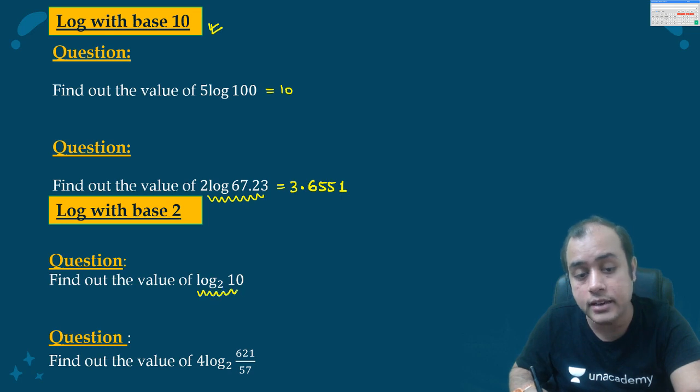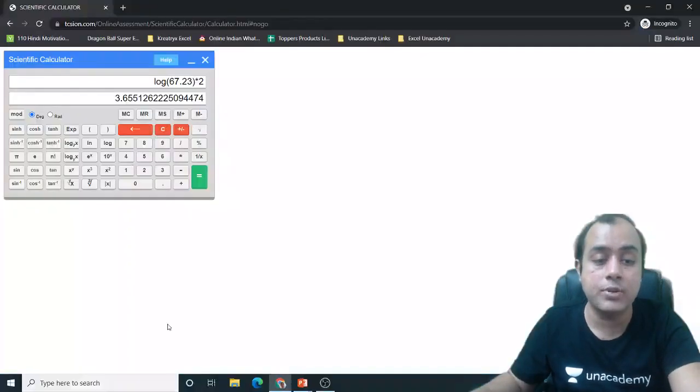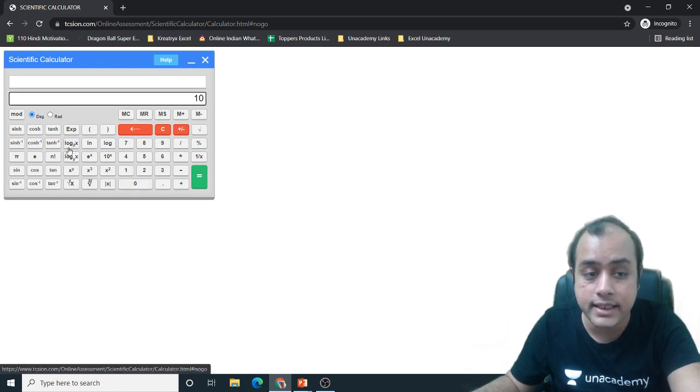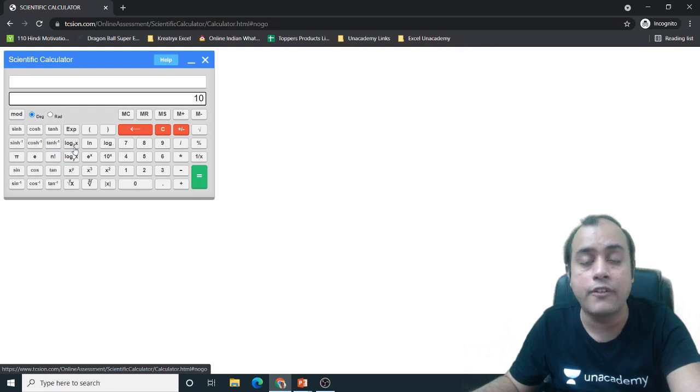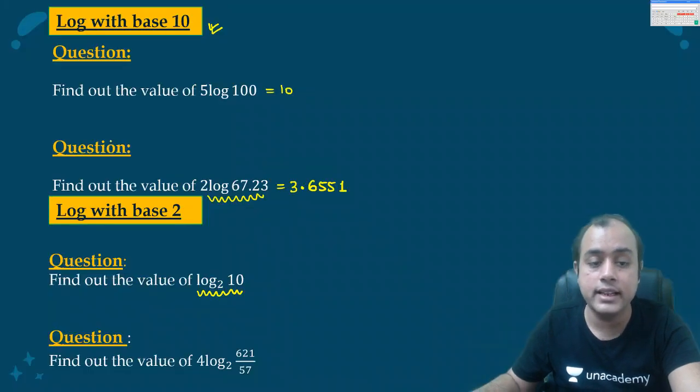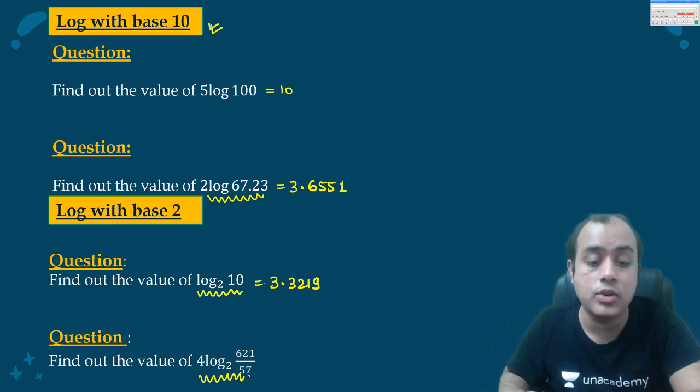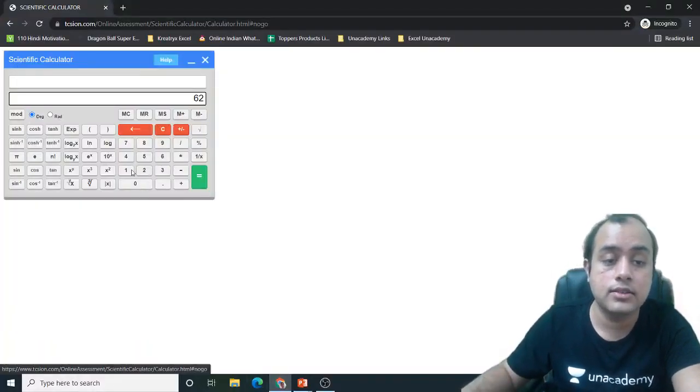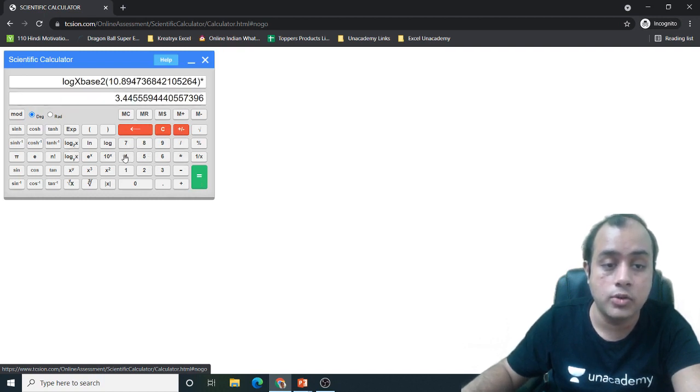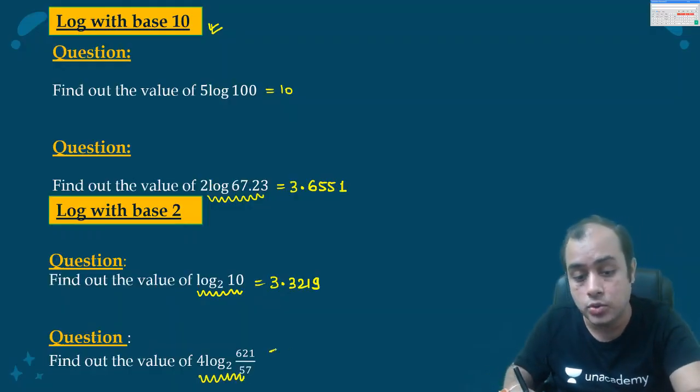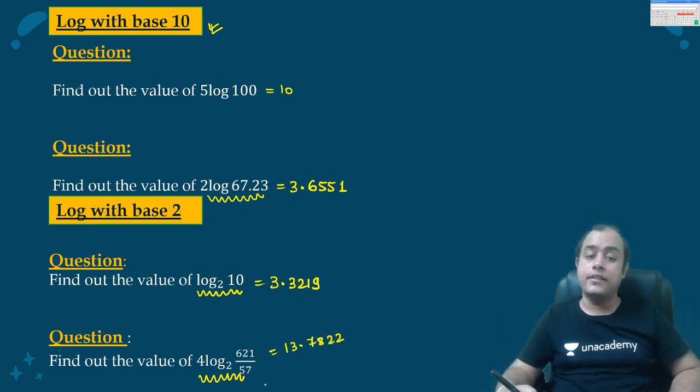Then log 10 on a base of 2. Again same process my dear. You enter 10, then you press this log 2x. It implies log of x on a base of 2. 3.3219. What about this? This seems a bit more complicated but actually it is not. 4 log on a base of 2, 621 by 57. So 621 by 57, log on a base of 2 into 4. So 13.7822. So these are the values. Now you have understood.